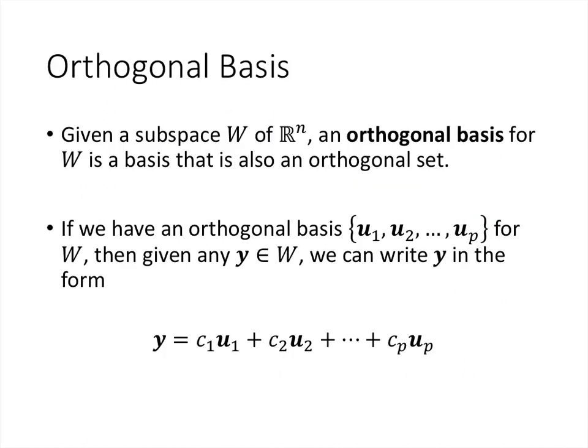Whenever we think about linearly independent sets, our mind should also think about bases. Given a subspace of the vector space Rn, an orthogonal basis is simply a basis that is also an orthogonal set. An orthogonal set is automatically linearly independent by the theorem we just proved, so whatever space is spanned by an orthogonal set of vectors, that orthogonal set is a basis for that space.